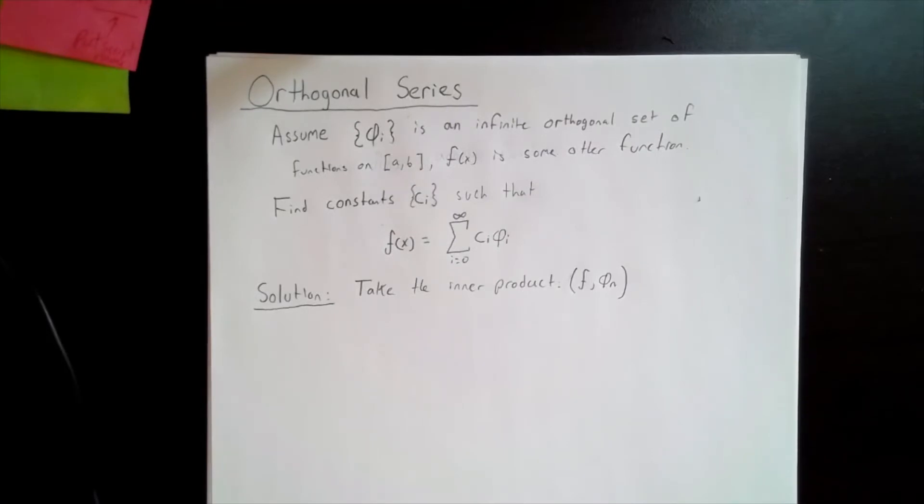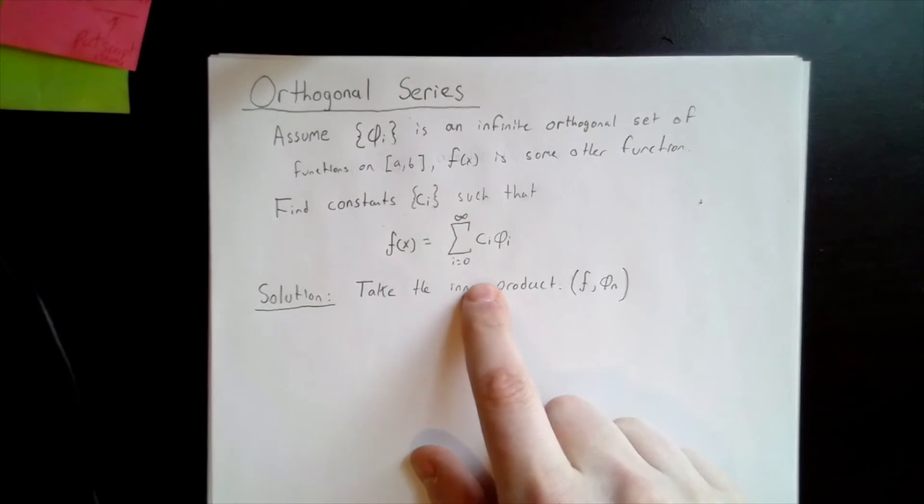Okay, now assuming that the set phi i is an infinite orthogonal set of functions on an interval a to b, let's try to find an infinite set of constants, ci, such that we can write any function, f of x, as an infinite sum of the multiplication of ci times phi i.